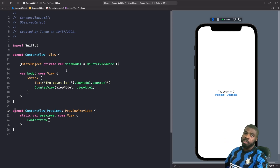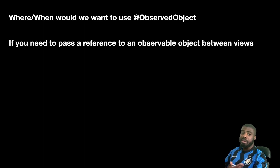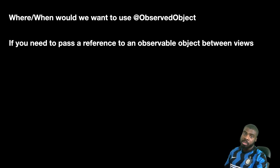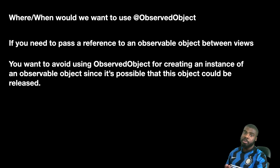That's probably the main use case for @ObservedObject. So where and when would you want to use it? If you need to pass a reference of an observable object between views, this is a very good use case — for example, a child view that needs to listen to changes or make changes to a view model. Also, you want to avoid using @ObservedObject to create view models, because the object can get released or lose its reference entirely.